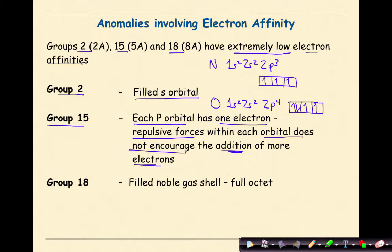For nitrogen, we have one electron in each orbital, and as I said before, this is pretty stable. If we add another electron in, there's going to be some repulsion between the two electrons, so the electron affinity is relatively low.